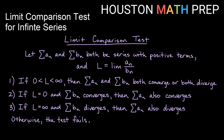The test can possibly fail. If you get a limit of zero but your sum of b sub n diverges, you get a failure. Or if you get a limit of infinity and your sum of b sub n converges, we don't really know for sure. So it is possible, even with these additional cases, that we have a situation where the test fails.